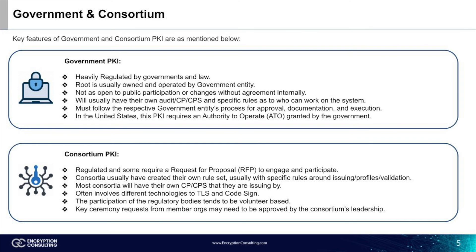For consortium PKI: it is regulated, and some require a request for proposal, or RFP, to engage and participate. Consortia usually have created their own set of rules, with specific rules around issuing profiles or validation. Most consortia will have their own CP or CPS that they are issuing by. It often involves different technologies beyond TLS and code signing. The participation of regulatory bodies tends to be volunteer-based, and key ceremony requests from member organizations may need to be approved by the consortium's leadership.